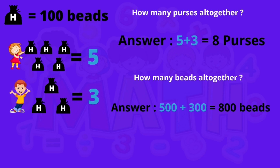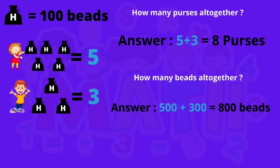Look here. Tony has three purses, each containing 100 bits, and Sonu has five purses each containing 100 bits. So how many purses do they have altogether? The answer is 5 plus 3, that is 8 purses. Now how many bits do they have altogether? That would be 500 plus 300, that is 800 bits. So they have 800 bits.